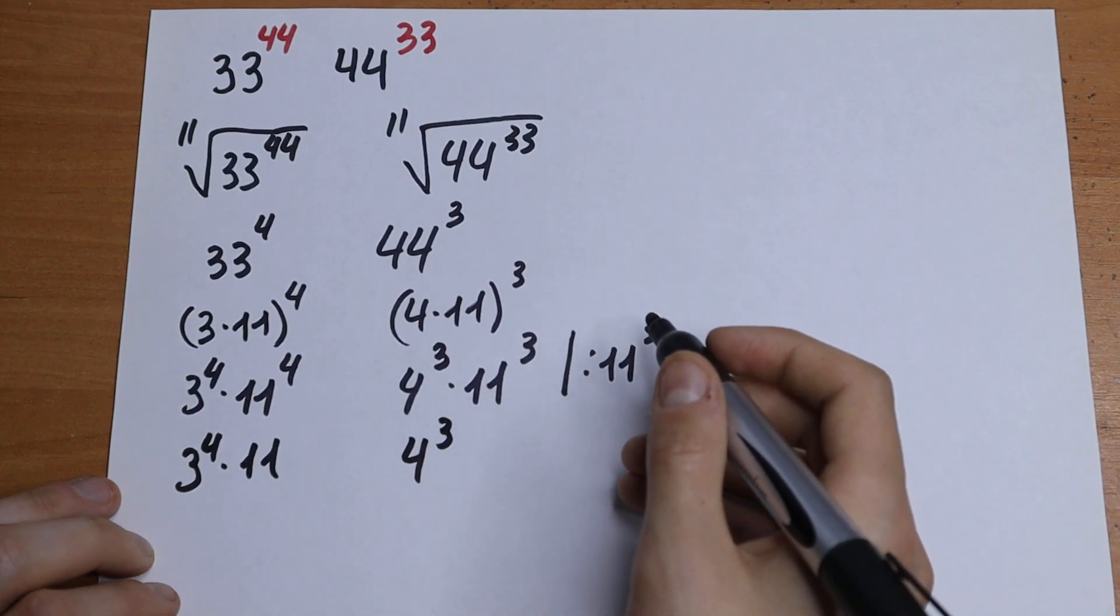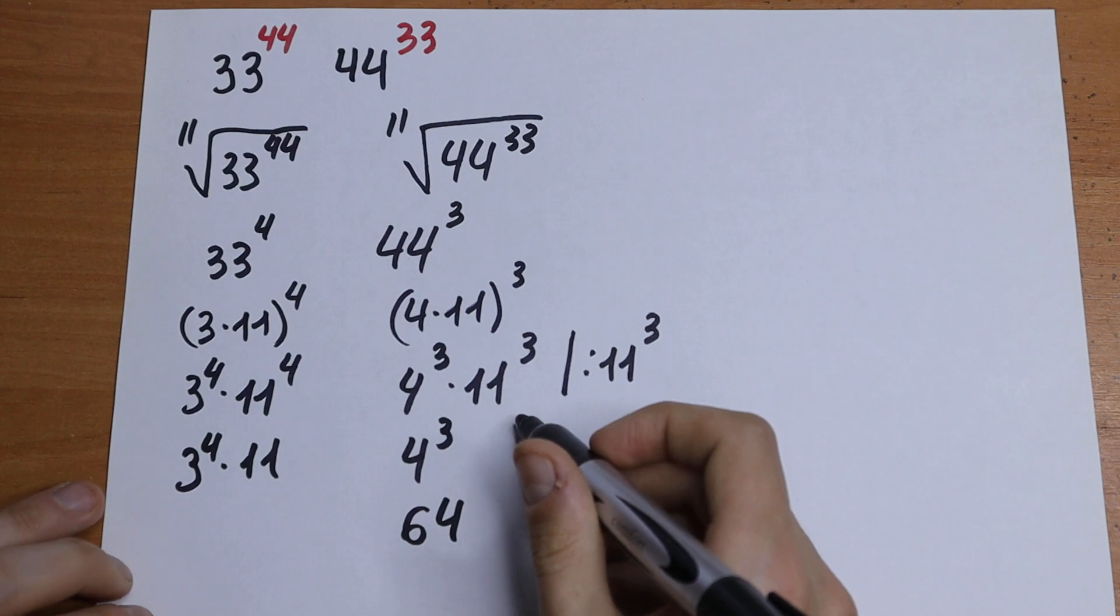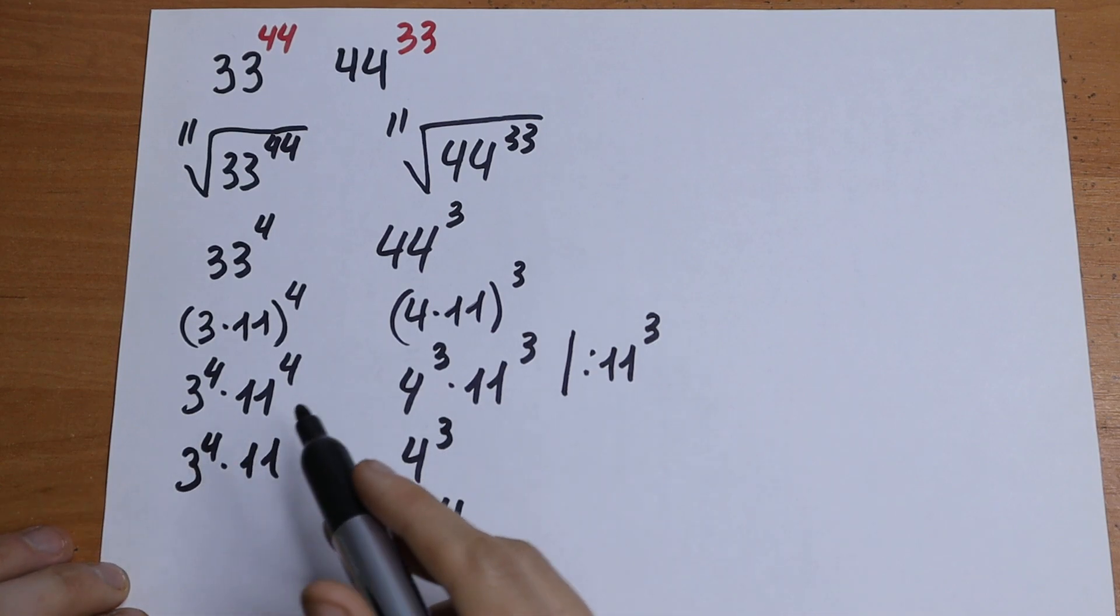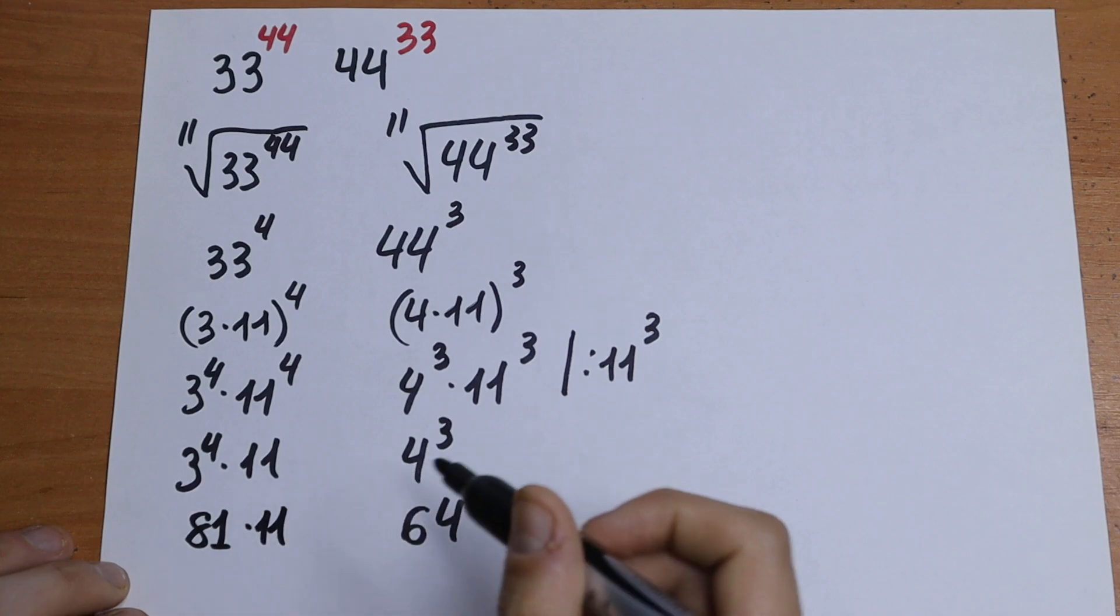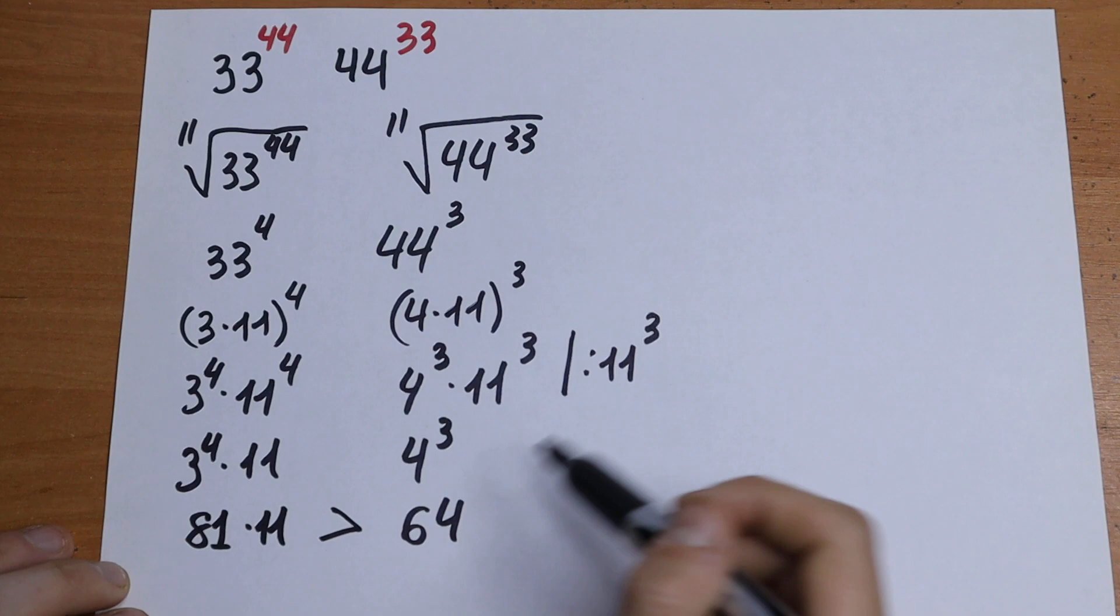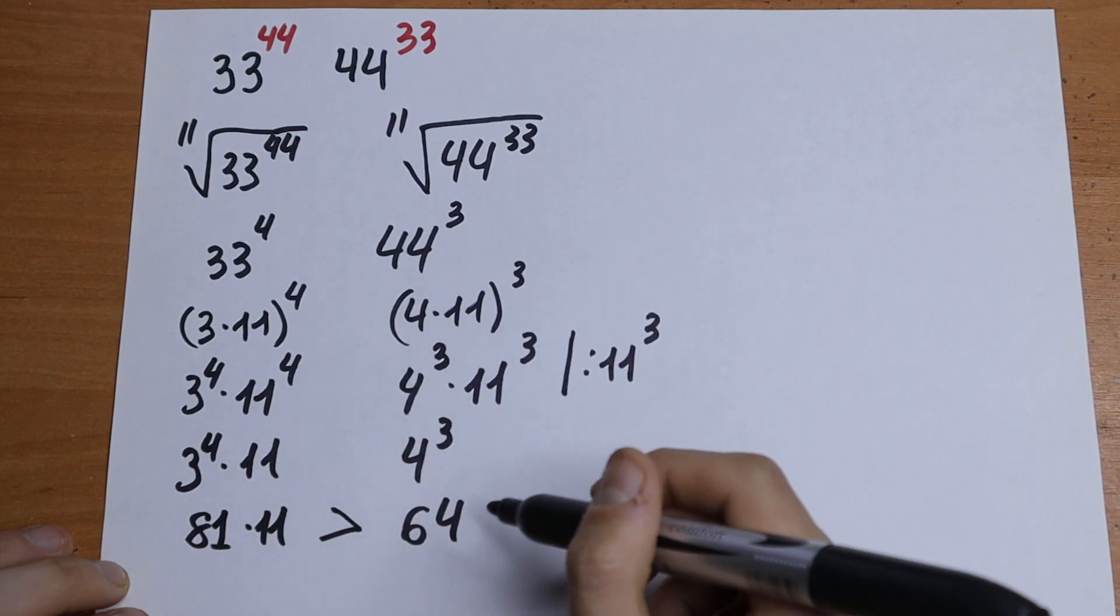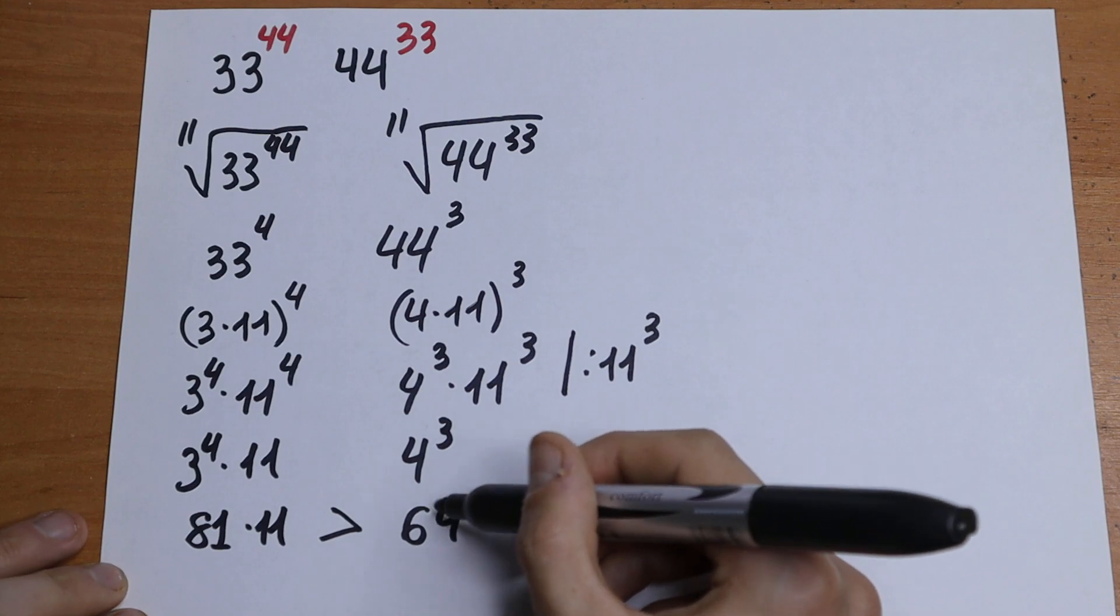Let's calculate this 4 cubed. 4 cubed equals 4 times 4 times 4 equals 64. And right here we will have 3 to the 4th power equal to 81 times 11. As you can see this on the left will be bigger because 81 times 11 is bigger than 64.